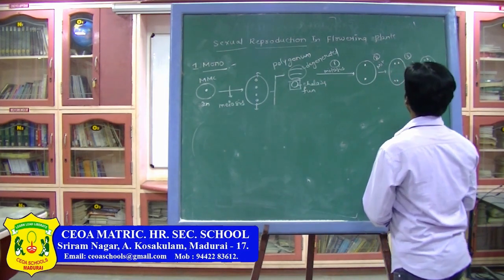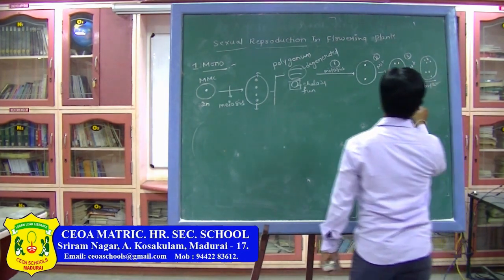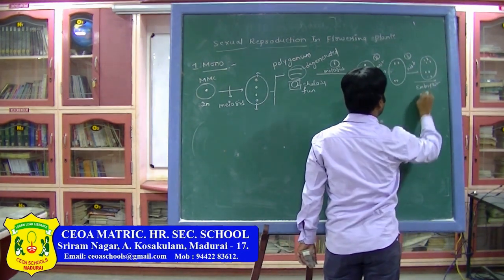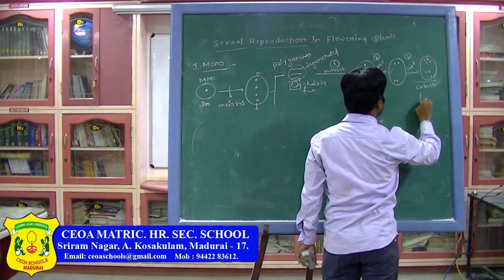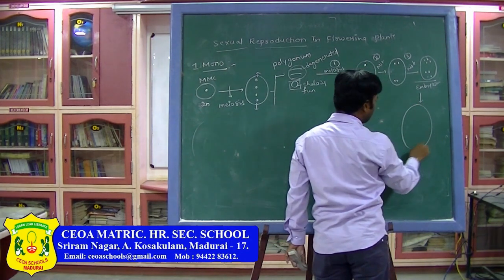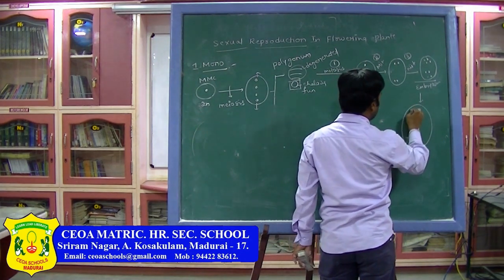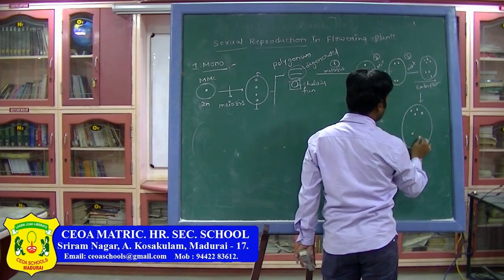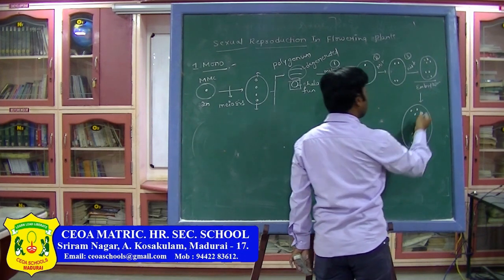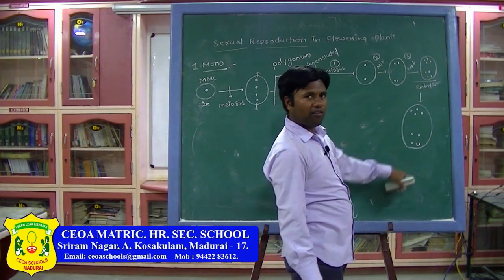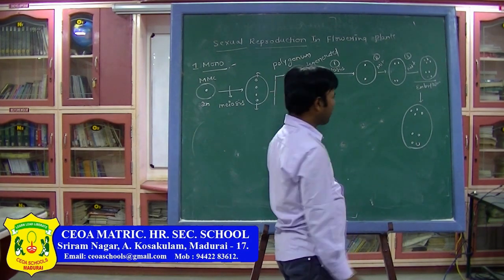During female gametophyte development, there is one meiosis and three mitoses — a total of four cell divisions. In contrast, the male gametophyte involves one meiosis and two mitoses. After karyokinesis and cytokinesis, the eight nuclei are arranged: four on the micropylar pole and four on the chalazal pole. One nucleus from each pole migrates to the center.